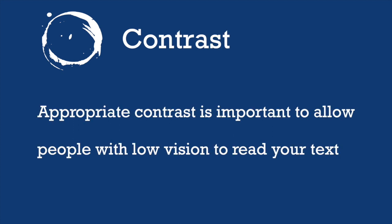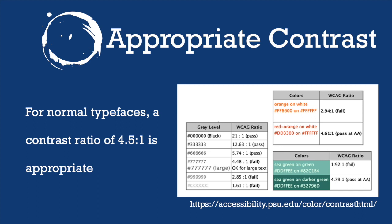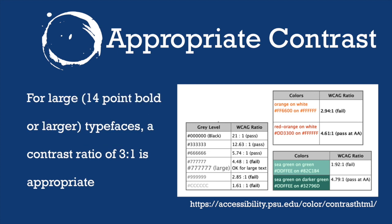We are now ready to discuss the third element of Universal Design for the Web: contrast. Appropriate contrast is important to allow people with low vision to read your text. If your website has poor contrast, some people will have a lot of trouble seeing what's on it. Keep in mind that two colors that contrast well for you may not contrast well for another person. For normal typefaces, a contrast ratio of 4.5 to 1 is appropriate. For large 14-point bold or larger typefaces, a contrast ratio of 3 to 1 is appropriate.